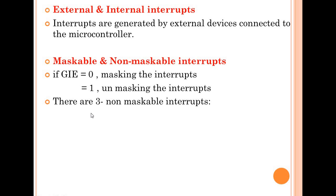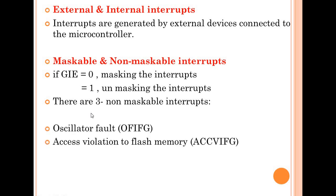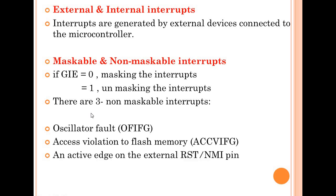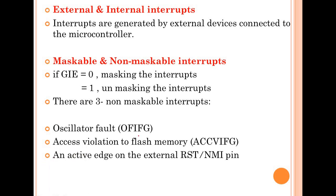Coming to non-maskable interrupts, there are 3 types. These interrupts cannot be disabled once they occur. The first one is the oscillator fault. If there is any fault in the oscillator, the total process stops and the CPU does not execute instructions. The flag that is set when there is an oscillator fault is OFIFG — oscillator fault interrupt flag — which indicates the fault in the oscillator.